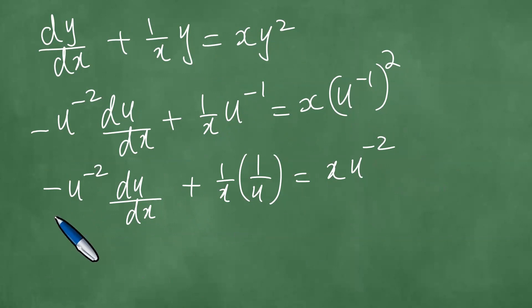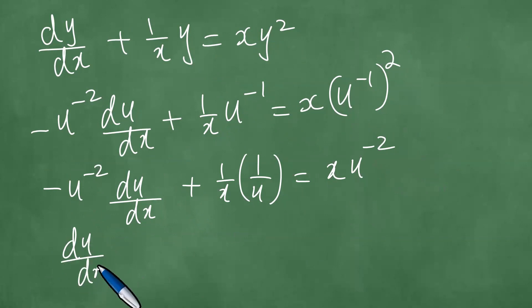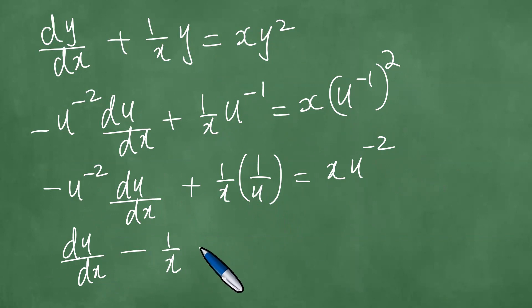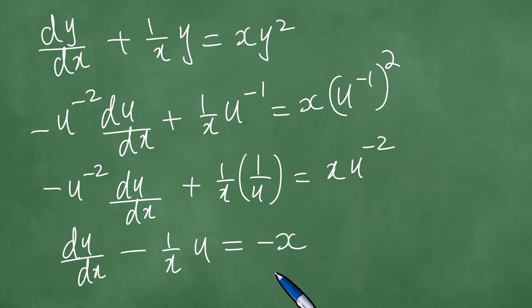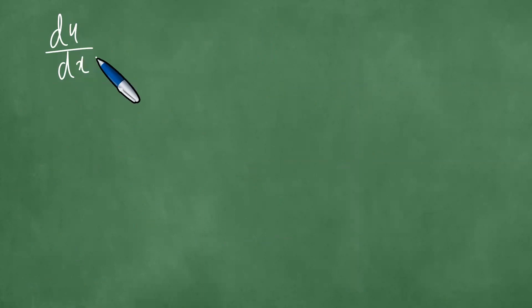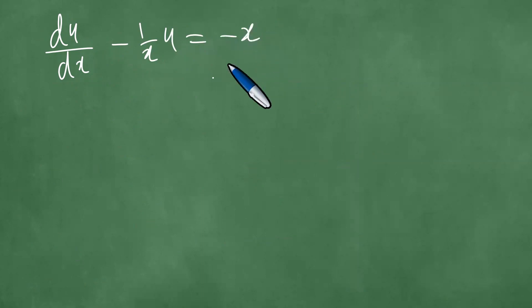We multiply through by minus u squared, both left and right. This gives du/dx minus 1 over x times u equals minus x. This is now a linear first-order ODE in u, which is straightforward to solve.